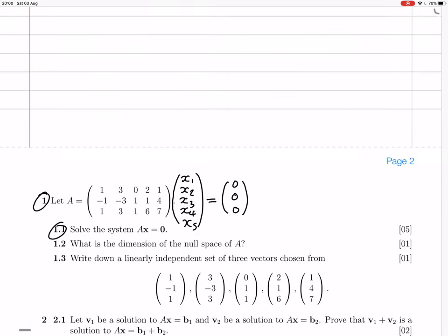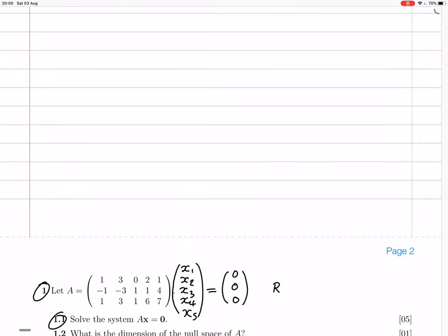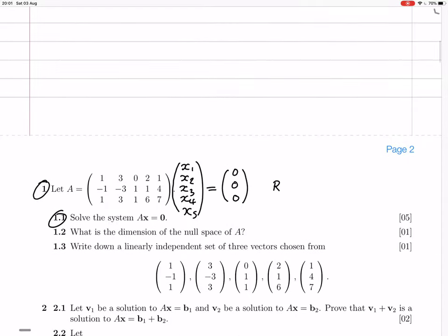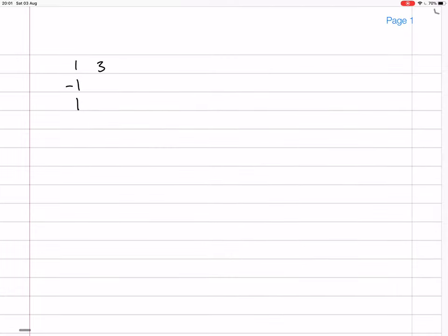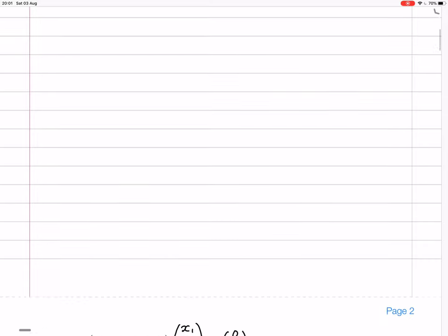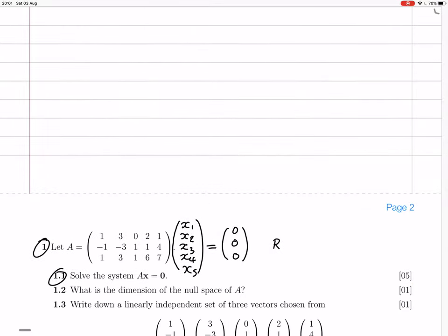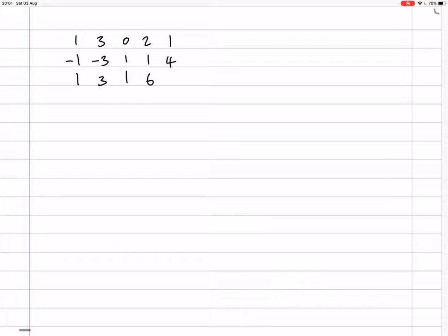Let me write down row 2 plus row 1. First, let me write down this matrix. It's 1, 3, 0, 2, 1 for the first row. Minus 1, minus 3, 1, 1, 4 for the second row. And 1, 3, 1, 6, 7 for the third row.